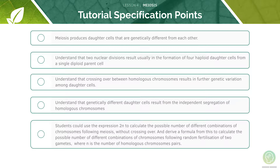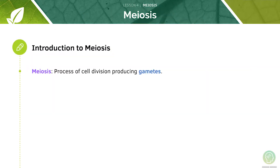Here are the AQA specification points for today's lesson. Feel free to pause the video now and have a read through them before we begin. We'll start off by looking at meiosis. Earlier, we learnt about mitosis, which is how somatic or body cells divide and how asexual reproduction can occur.